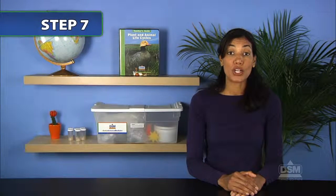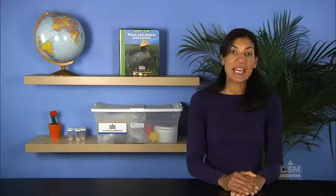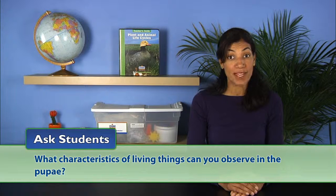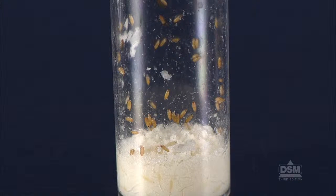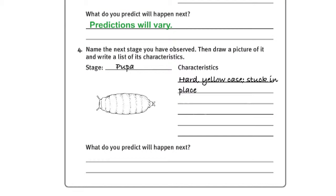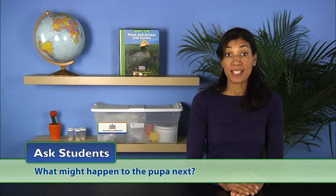Refer students to the chart Characteristics of Living, Nonliving, and Dead Things. Ask students what characteristics of living things can you observe in the pupae. Students should note that the pupae do not appear to be alive, or that the pupae seem to be resting or sleeping. Distribute a copy of the fruit fly pupa picture to each team and instruct students to use the pictures, as well as their own observations, to complete Question 4 of Activity Sheet 5, Part B. Then ask what might happen to the pupae next.